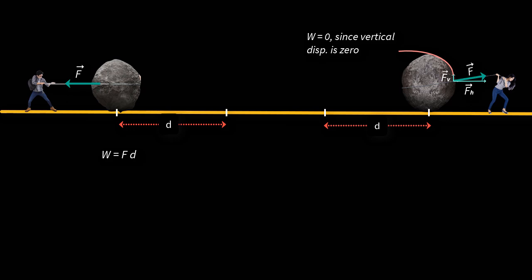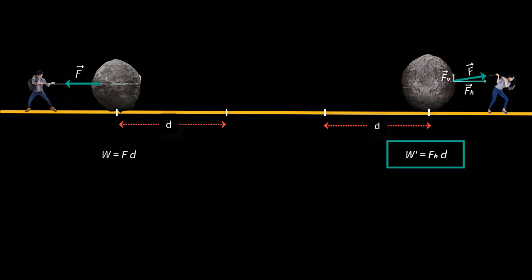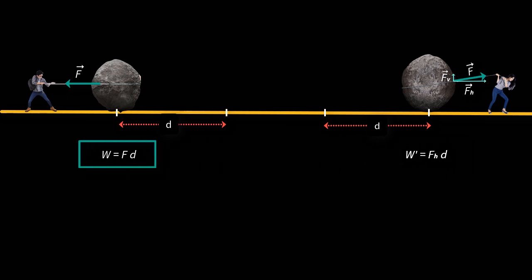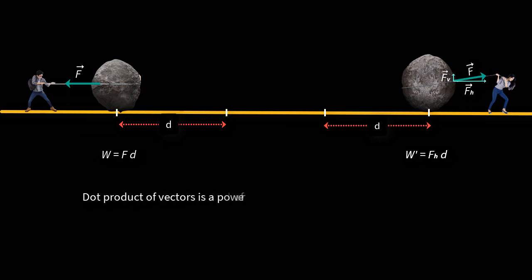However, the part of the force acting in the horizontal direction is doing work, which is equal to the force in the horizontal direction times the displacement — and this will be less than the total force times displacement. For such situations, the dot product of vectors is a very powerful tool to find the solution, and that is what we learn in this lesson.